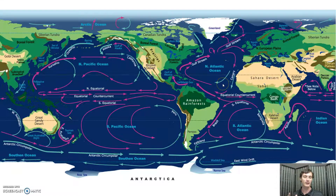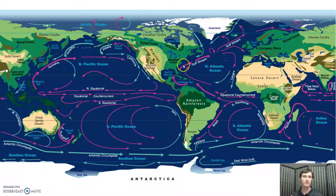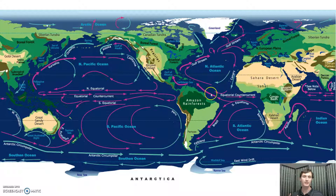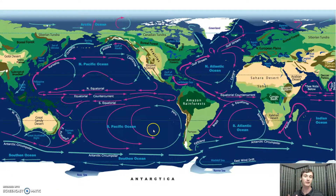We can actually see the same thing happening over here in the Atlantic. It gets warm at the equator, comes over to the continent, brings some heat northward, and in this case it means the Gulf Stream continues, but part of it comes back down as cooler water and the cell repeats. We can see the same sort of circulation pattern — clockwise in the northern hemisphere and counterclockwise in the southern hemisphere — for these different currents.